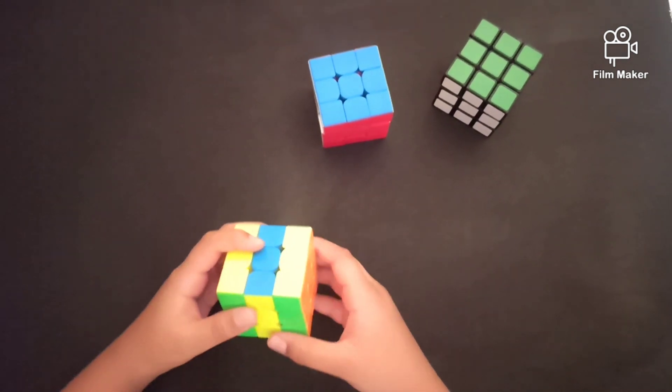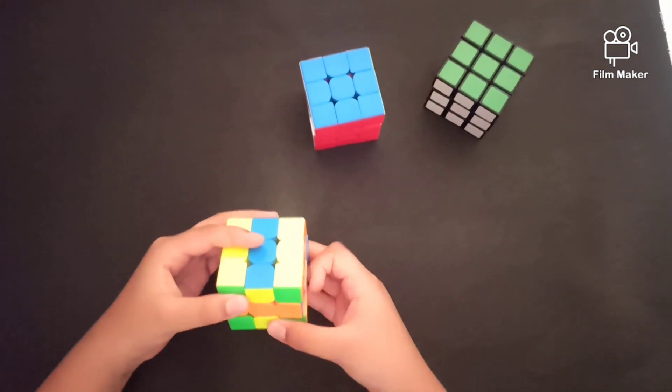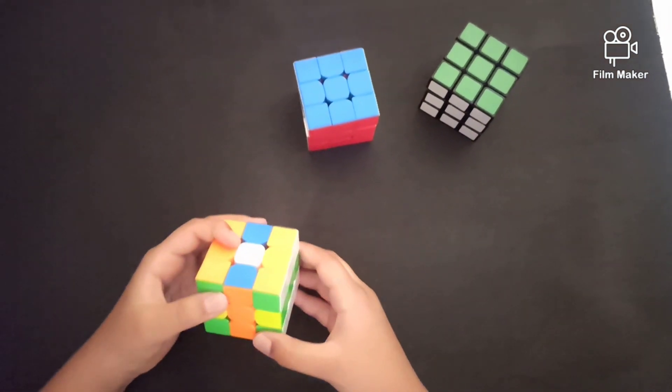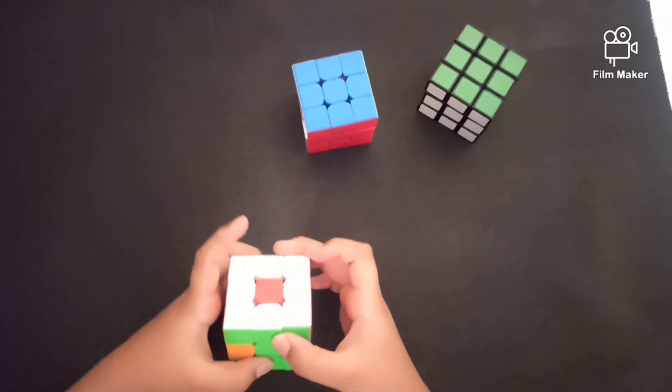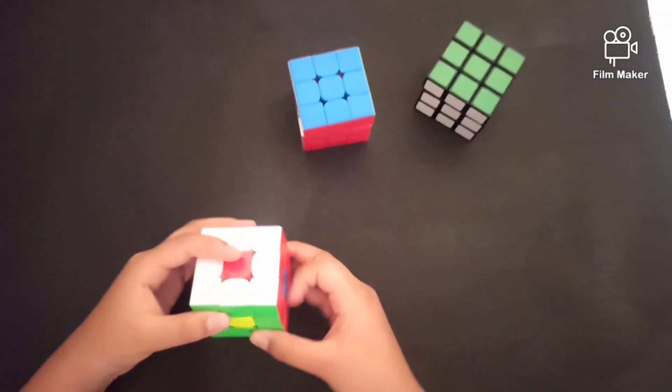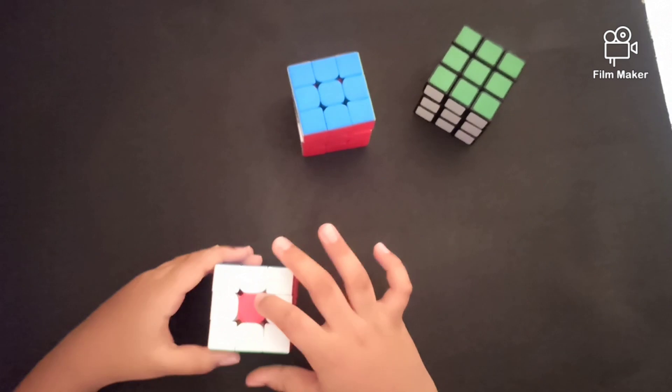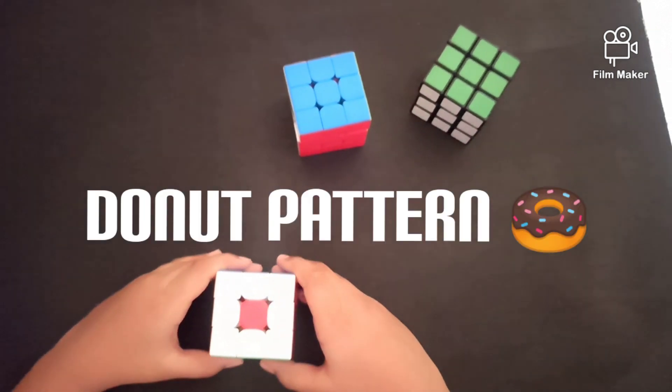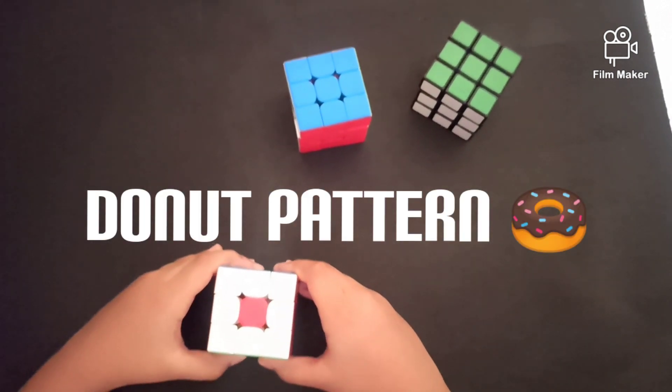Turn the cube, move the middle layer, turn the cube, move the middle layer, turn the cube, and again move the middle layer. This is called the donut pattern. Look at all the sides.